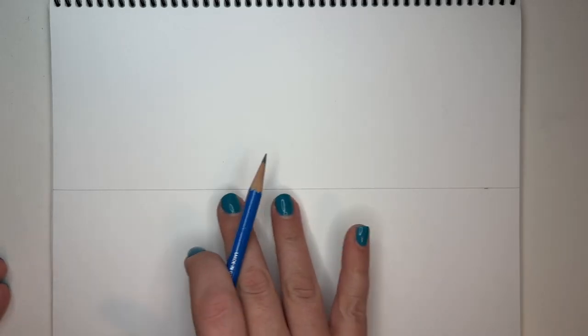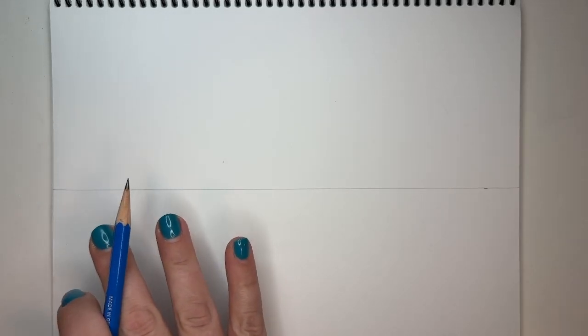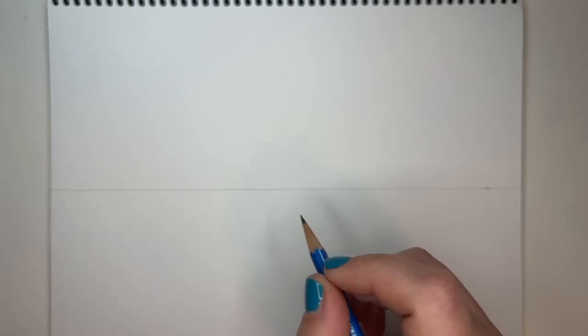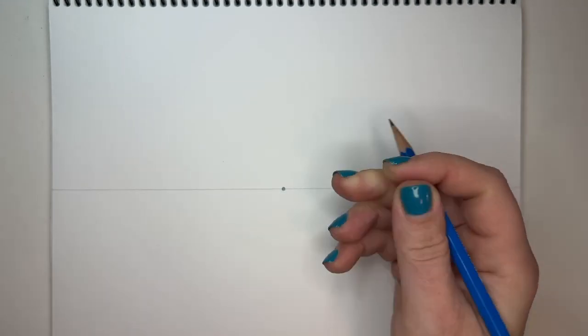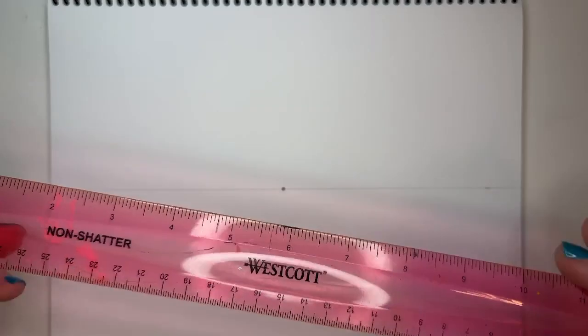So after you have your horizon line in, you'll want to put your vanishing point on the horizon line. We only need one vanishing point because this is one-point perspective, and it can go anywhere on the horizon line that you want it to. But oftentimes, I put it about in the center for these basic boxes and just getting started.